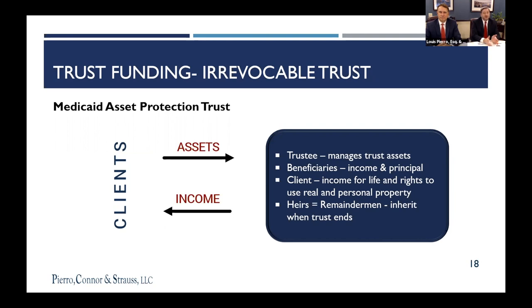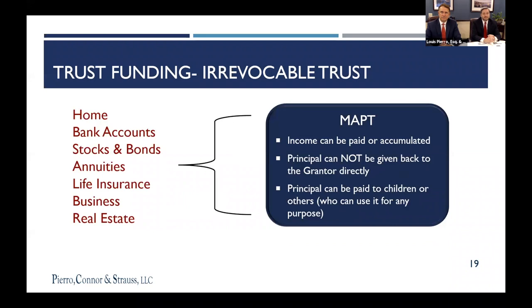In this trust, you as the grantor are entitled to all income — dividends, interest from an account in here, or net rent — that can go out to you. Principal is going to stay in the trust, though we carefully draft this trust so there is an ability to get principal out to you, typically through the children. We name them as lifetime beneficiaries. If you need money for, say, a trip around the world, the trustee would write a check to one of your children and they would turn around and give that back to you.